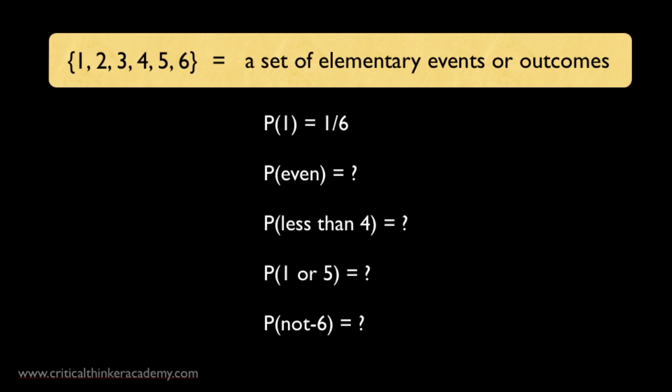But we also want to be able to figure out the odds of different logical combinations of these elementary outcomes. Like, for example, the odds of rolling an even number, or a number less than four, or a number that's either a one or a five, or a number that's not a six.